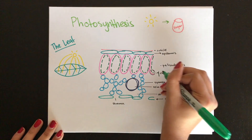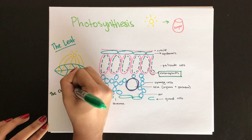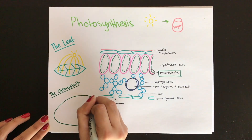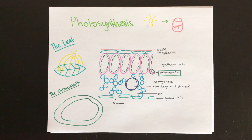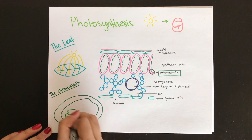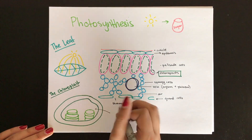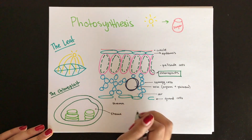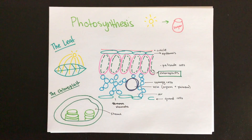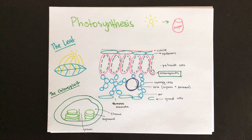Photosynthesis occurs within the chloroplast of cells. Chloroplasts are double membrane structures with an inner fluid called the stroma. Within the stroma are membrane structures called thylakoids and the inner space of the thylakoid is called the thylakoid space. Stacks of thylakoids on top of each other are called grana, and chlorophyll is the pigment that makes thylakoids green.